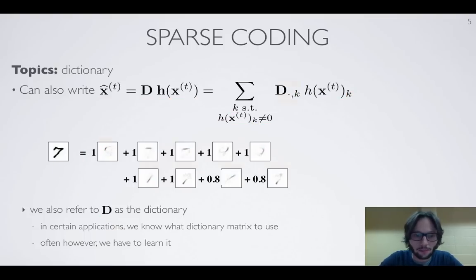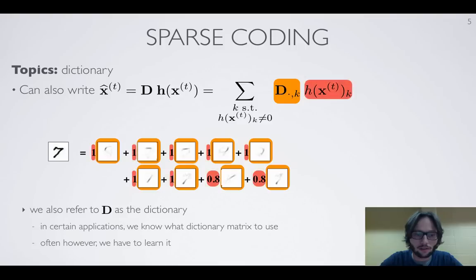And just to be explicit, so now these little images, they would correspond to the images we have here of each character. They would correspond to the columns of D. And then the values here, they correspond to the latent representation values.